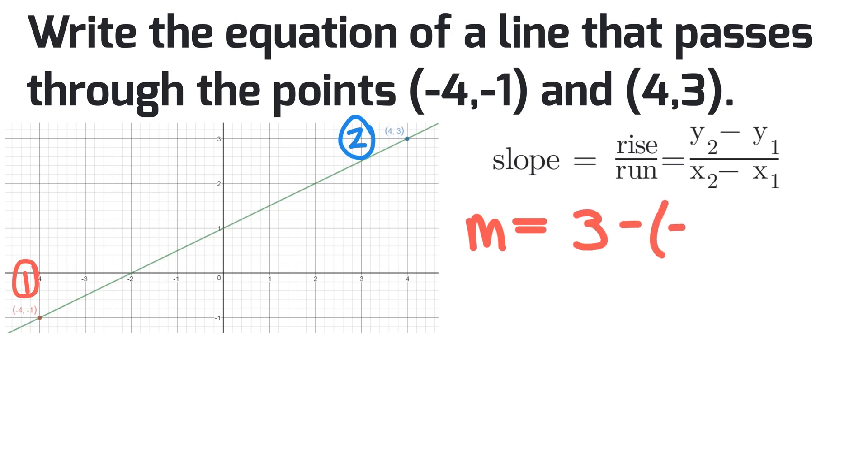In the numerator: 3 minus negative 1. In the denominator: 4 minus negative 4. That simplifies to positive 4 all divided by 8, or we can simplify that to 1 half. So I'm going to write my slope here: m equals 1 half.